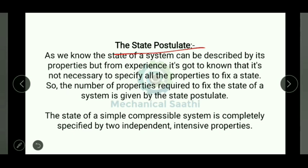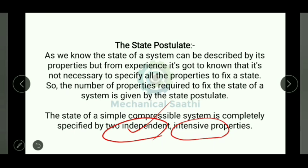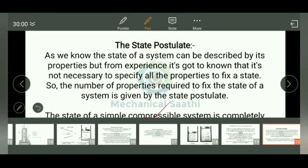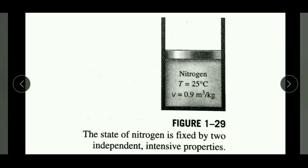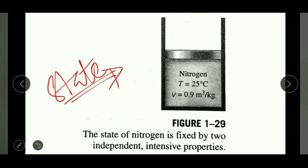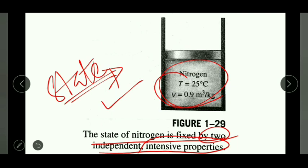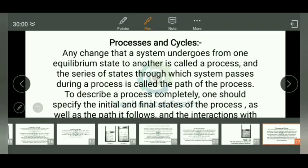Experimentally it was found that it is not necessary to define all properties to describe a state — a smaller number suffices. The state postulate states: the state of a simple compressible system is completely specified by two independent intensive properties. For example, the state of nitrogen can be fixed by temperature and specific volume — two independent intensive properties.